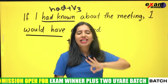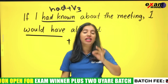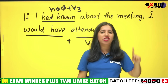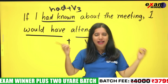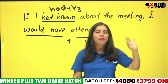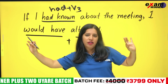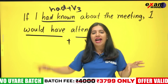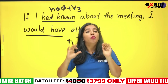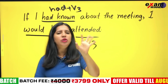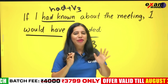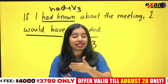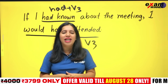So we have three conditions. To summarize: First condition — simple present in the if part, will plus V1 in the main part. Second condition — simple past (V2) in the if part, would plus V1 in the main part. Third condition — past perfect (had plus V3) in the if part, would have plus V3 in the main part.